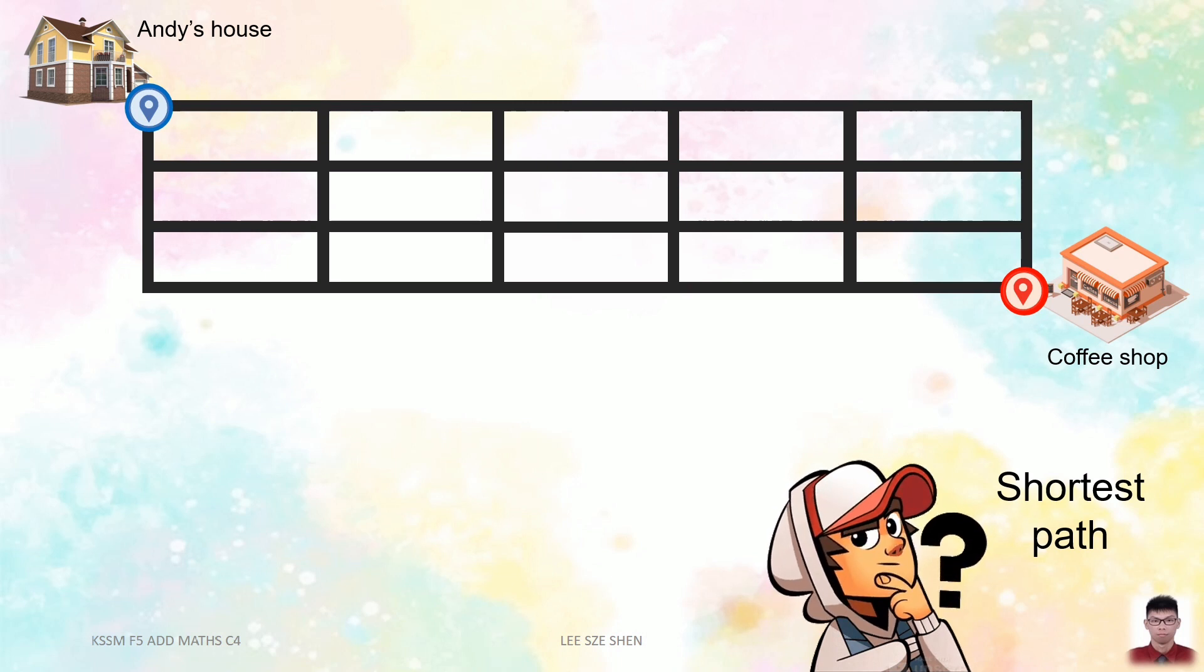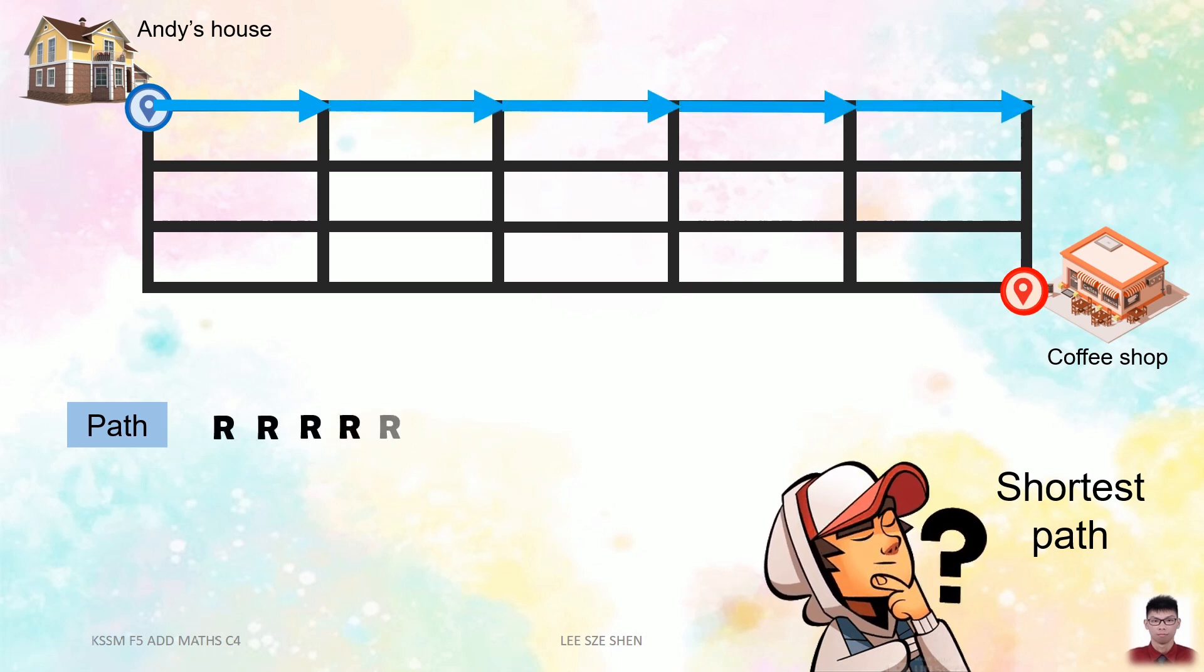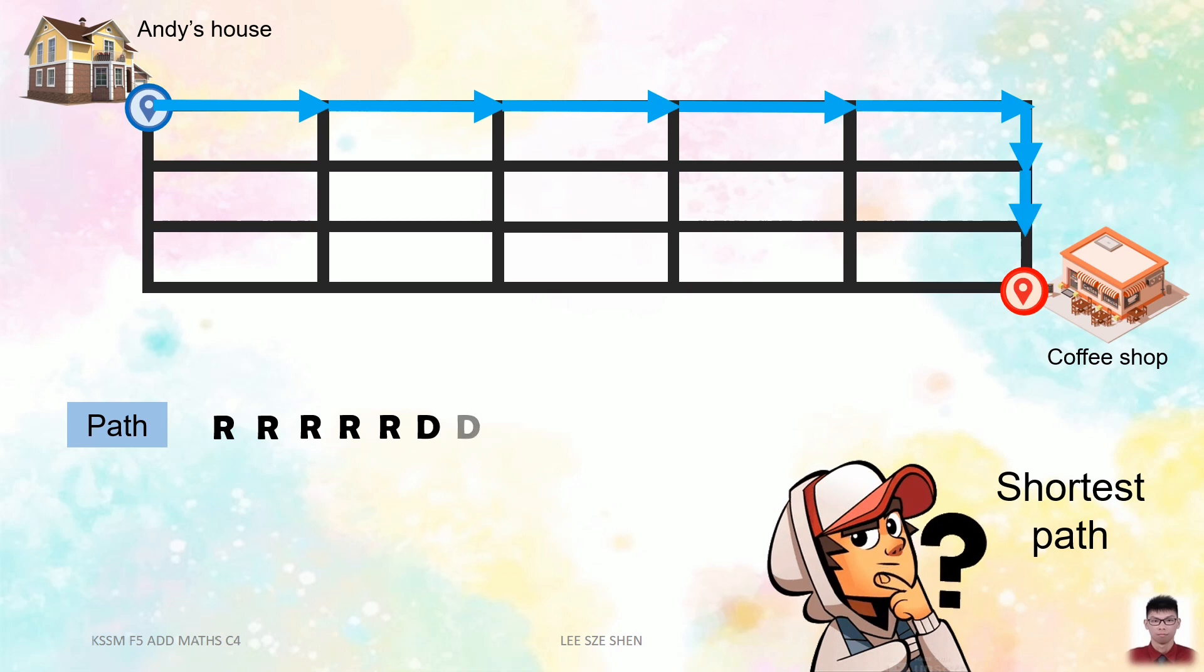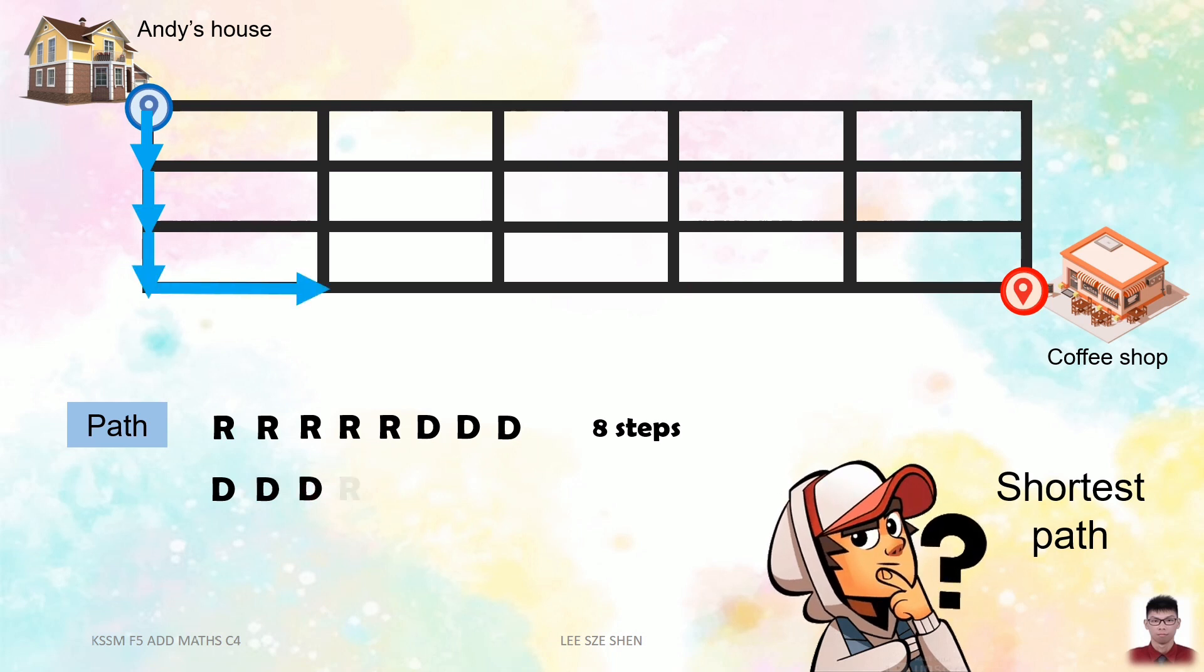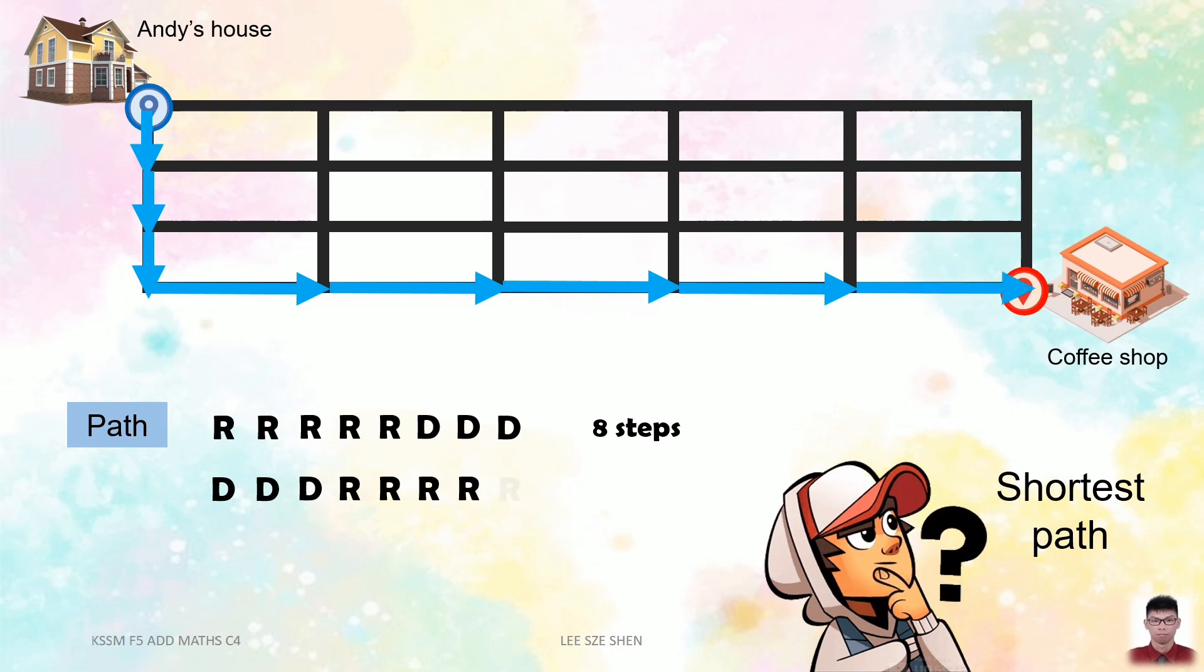A lot would think of the outer path. That is right, right, right, right, right, down, down, down, which takes a total of 8 steps to reach the coffee shop. Another path is down, down, down, right, right, right, right, right to reach the coffee shop with also 8 steps.